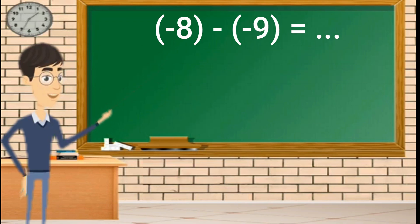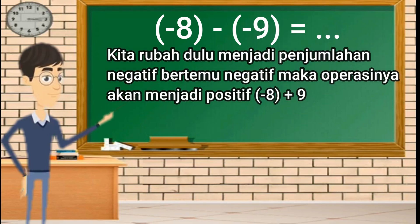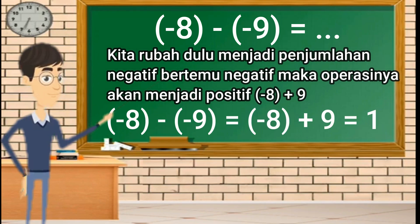Negatif 8 dikurangi negatif 9. Kita ubah dulu menjadi penjumlahan sehingga berubah menjadi negatif 8 ditambah 9. Negatif 8 dikurangi negatif 9 sama dengan negatif 8 ditambah 9 sama dengan 1.